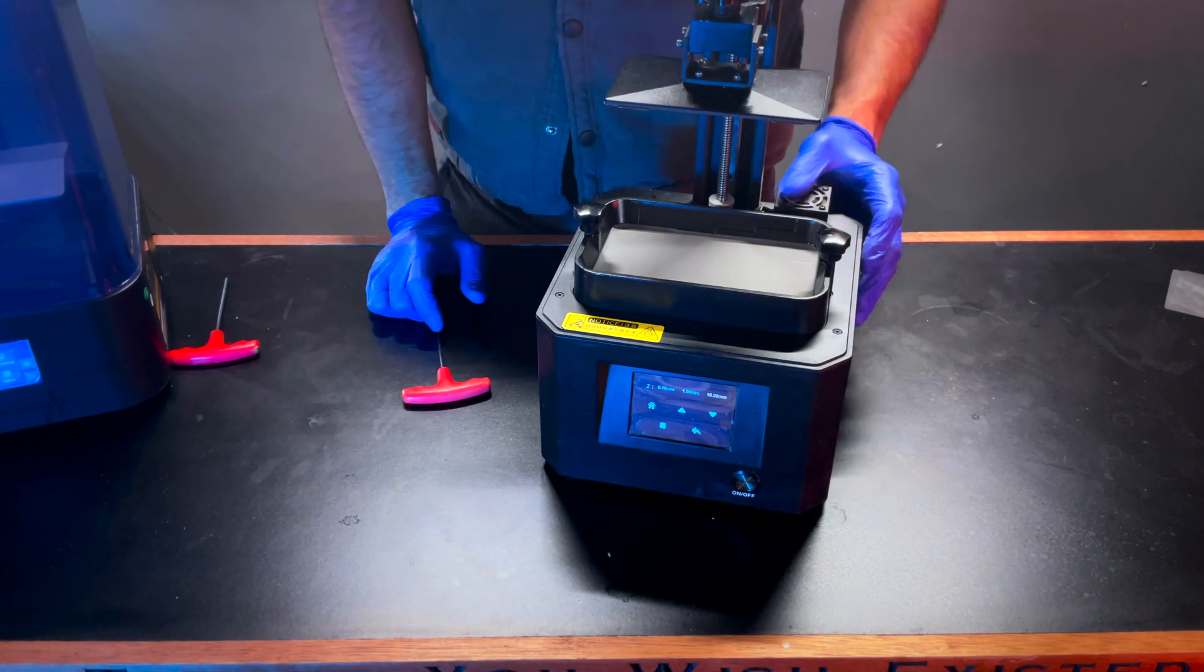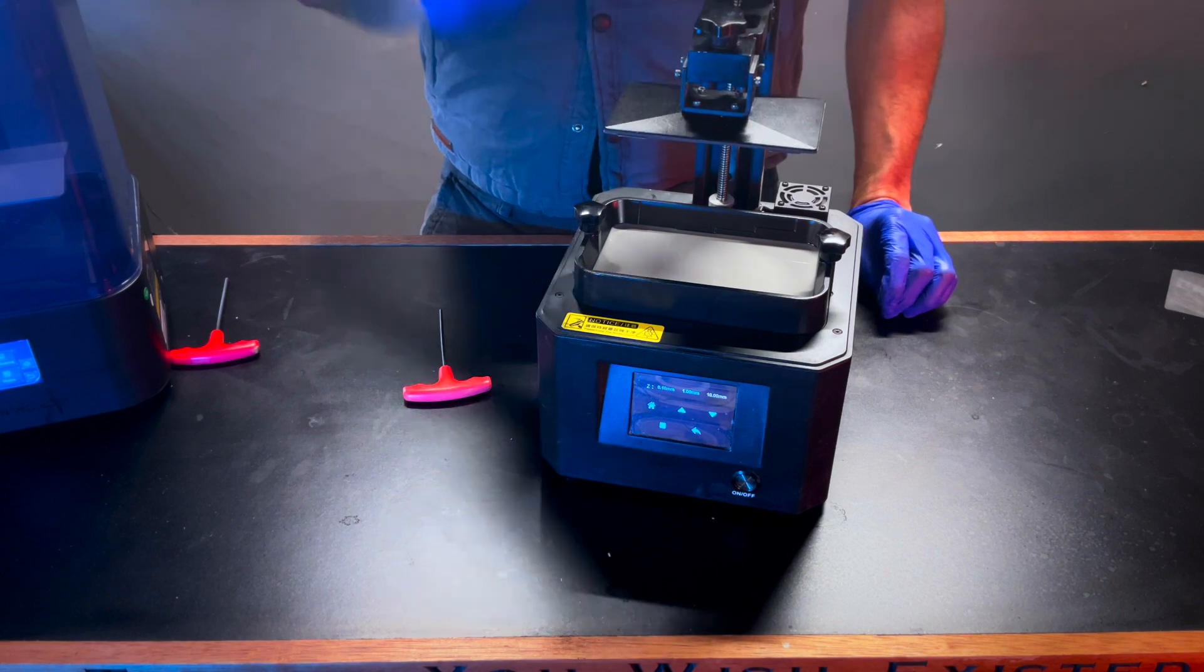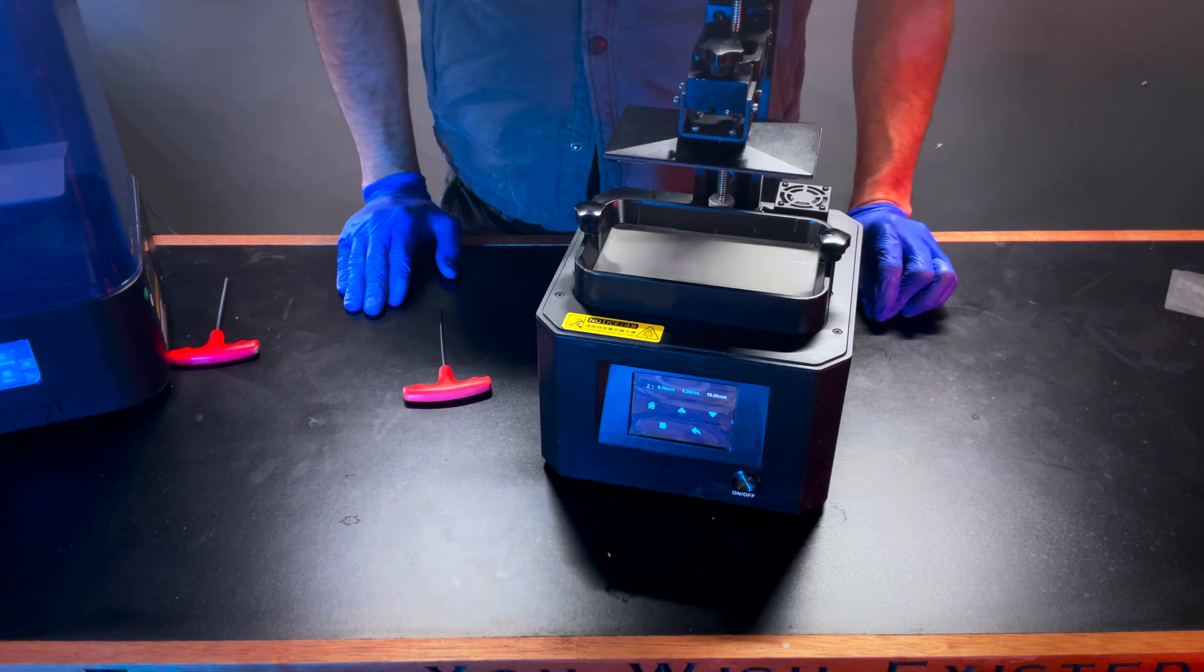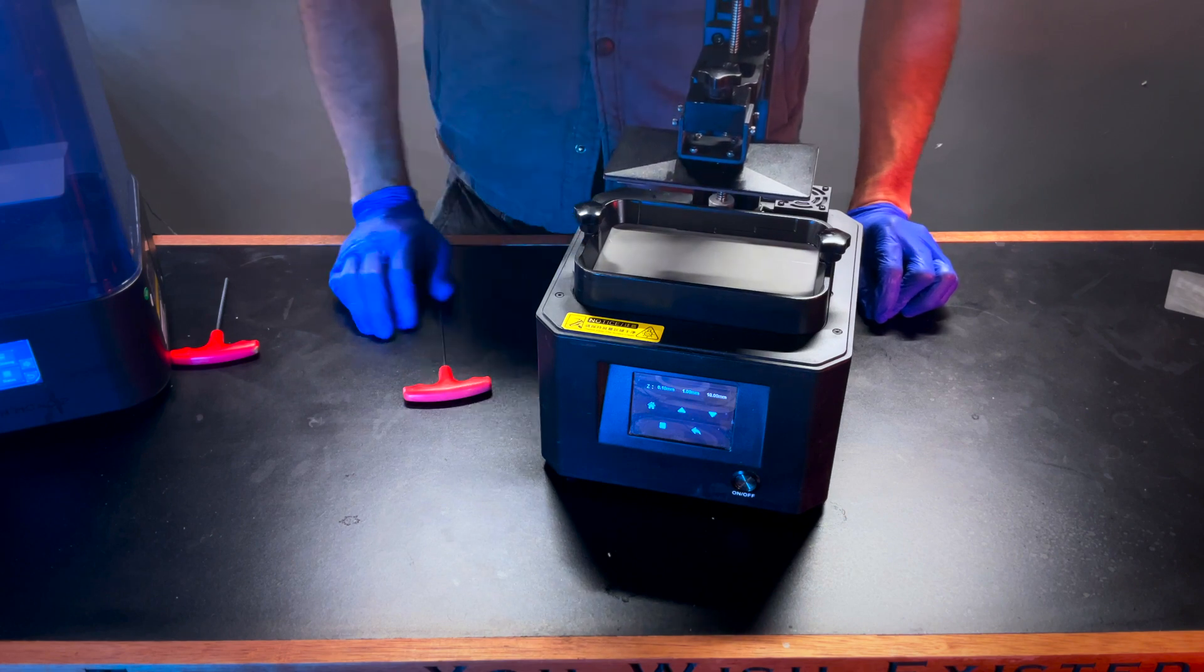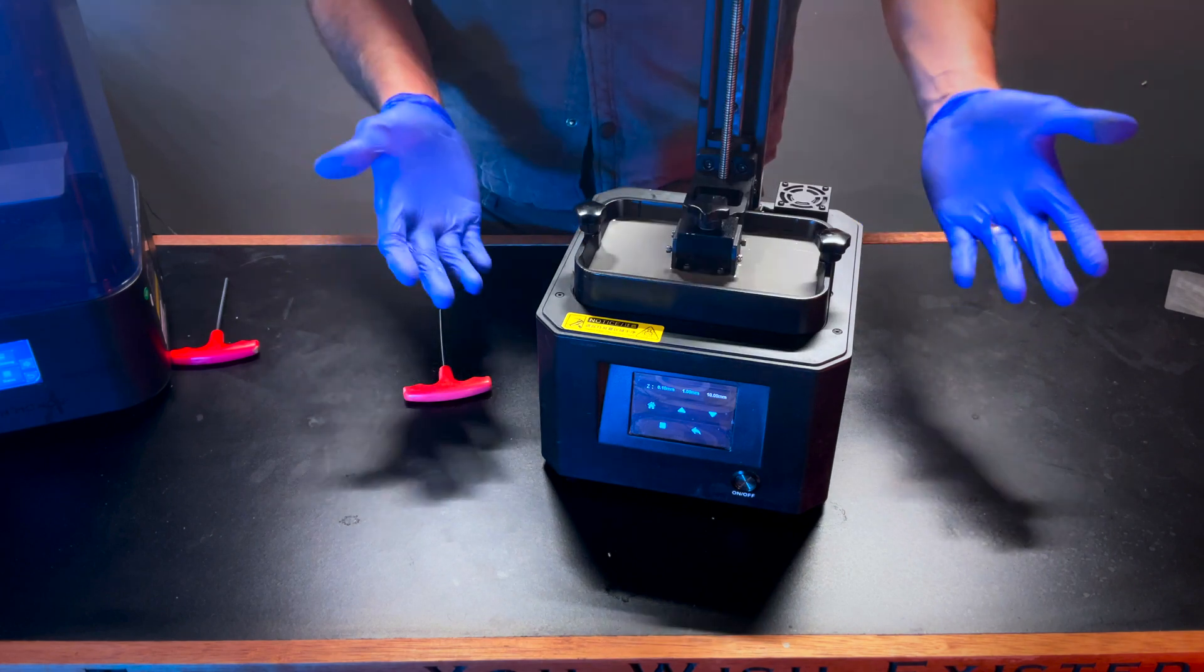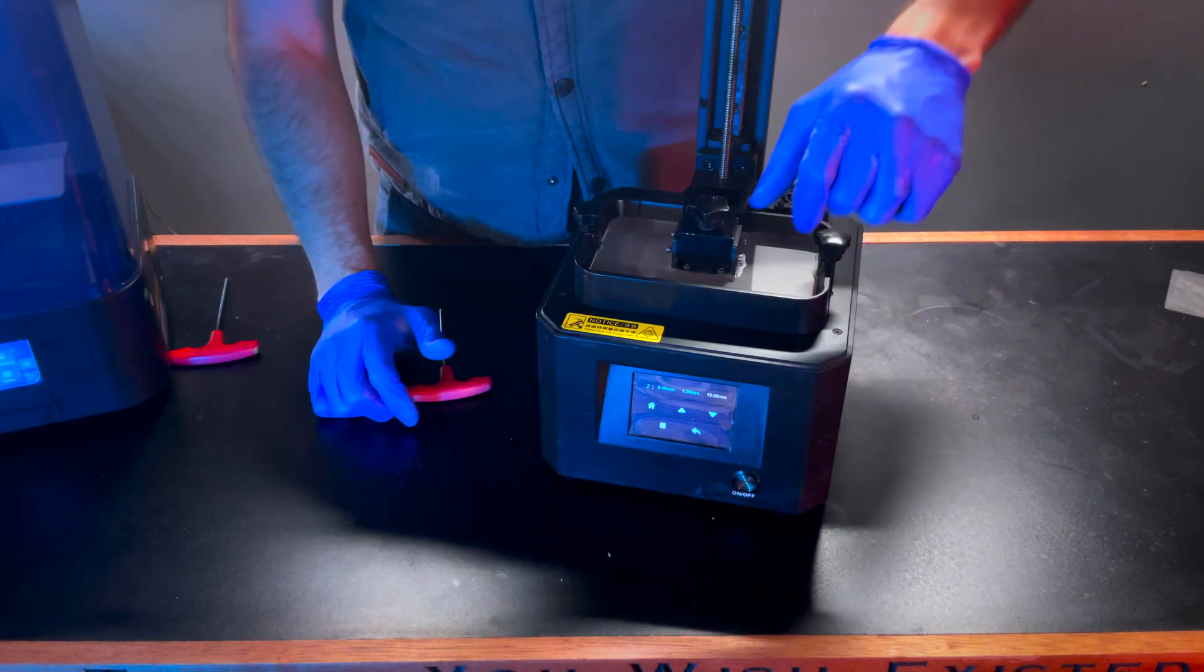And this, just like before, is going to take the build plate and set it flat against the screen or technically your film on top of your resin screen. Alright guys, once it has stopped moving, it's a good idea to have gloves on for this portion.